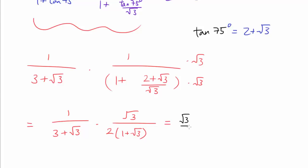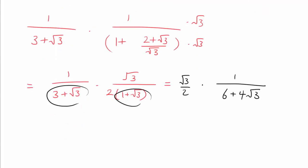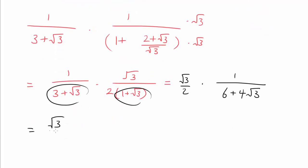And from here it's just cleaning it up. We have square root of 3 over 2 times 1 over... When we multiply these two, we are going to get (6 plus 4 times square root of 3). We can take out another 2 and then rationalize the fraction.